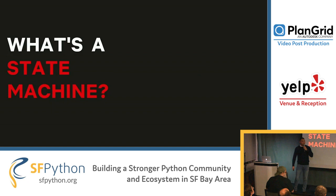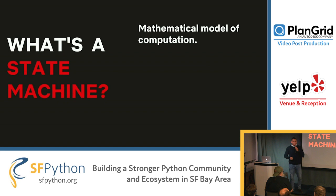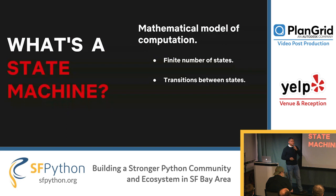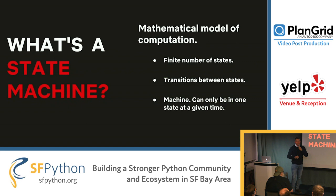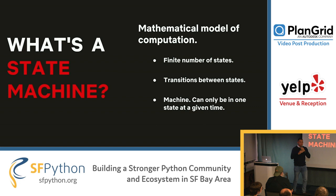So let's talk about state machines. What's a state machine? A state machine is a mathematical model of computation with a finite number of states, transitions between states, and a machine that can only be in one state at a given time. All this sounds very theoretical and mathematical, but in reality a state machine can be seen as a directed graph, where each node represents a state and the connections between nodes represent transitions from one state to another.